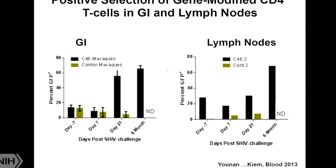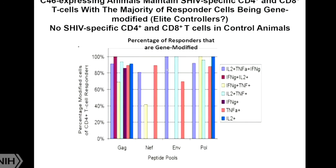We saw very nice positive selection in the gut and lymph nodes at day 21 and six months, demonstrating protection and selection of genetically modified HIV-protected cells in the GI tract and lymph nodes. Most importantly, only the C46-expressing animals maintained SHIV-specific CD4 and CD8 T cells, and the majority of those were genetically modified and HIV-protected. This showed that protection of CD4 cells is critical to maintaining immune responses against SHIV or HIV.